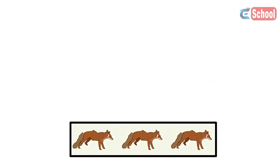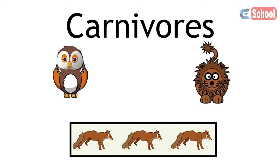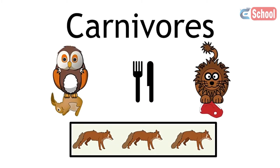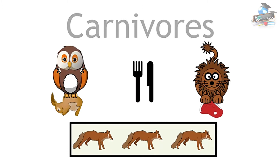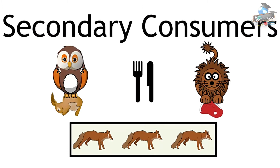Level 3 is carnivores who eat herbivores. They are eating organisms from level 2, so they are the secondary consumers.